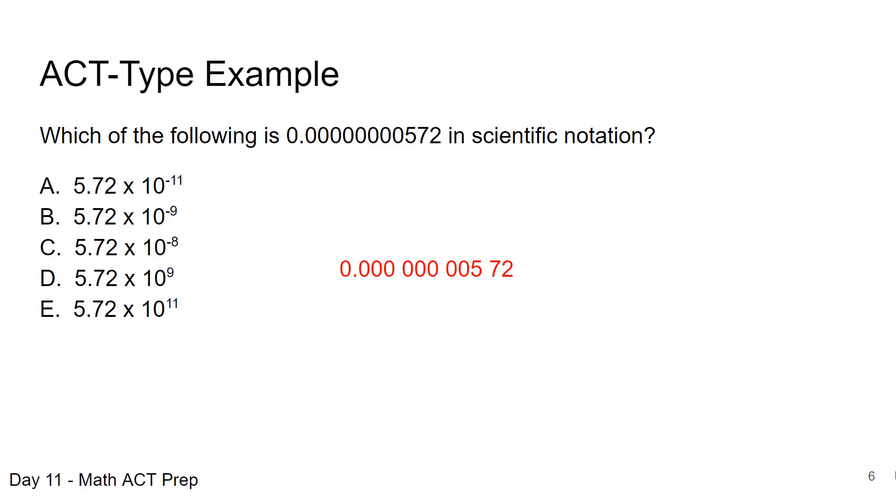So we begin with this number, and sometimes it's easier to write where we can organize our zeros in threes, and we can see that we would move that decimal point nine spots to the right, making 5.72 times 10 to the negative 9 answer choice B the correct choice here.